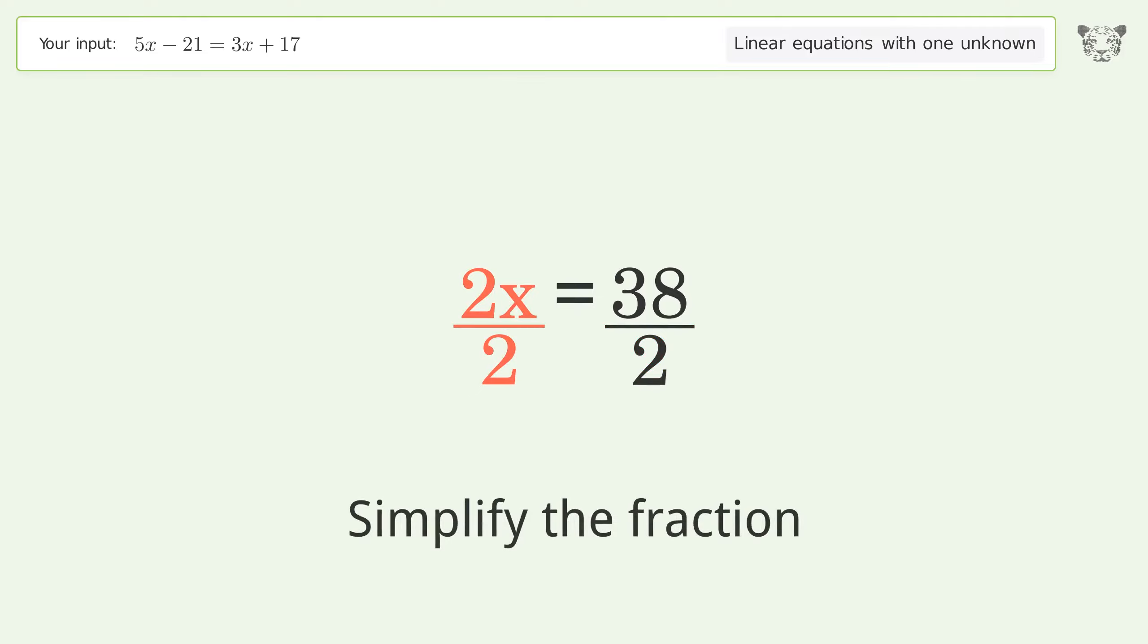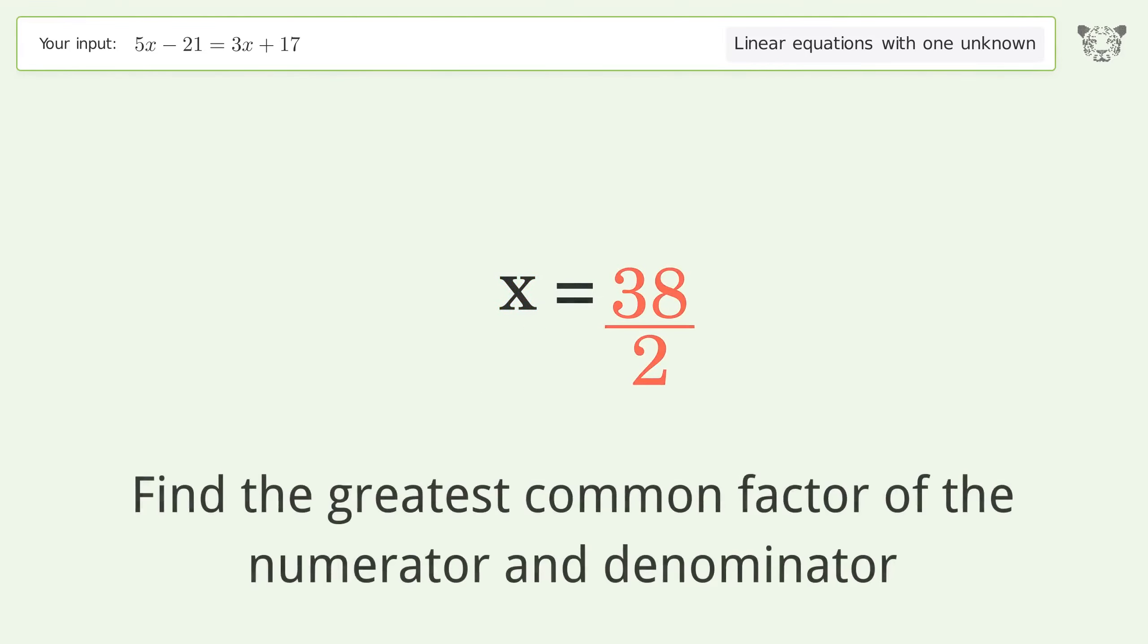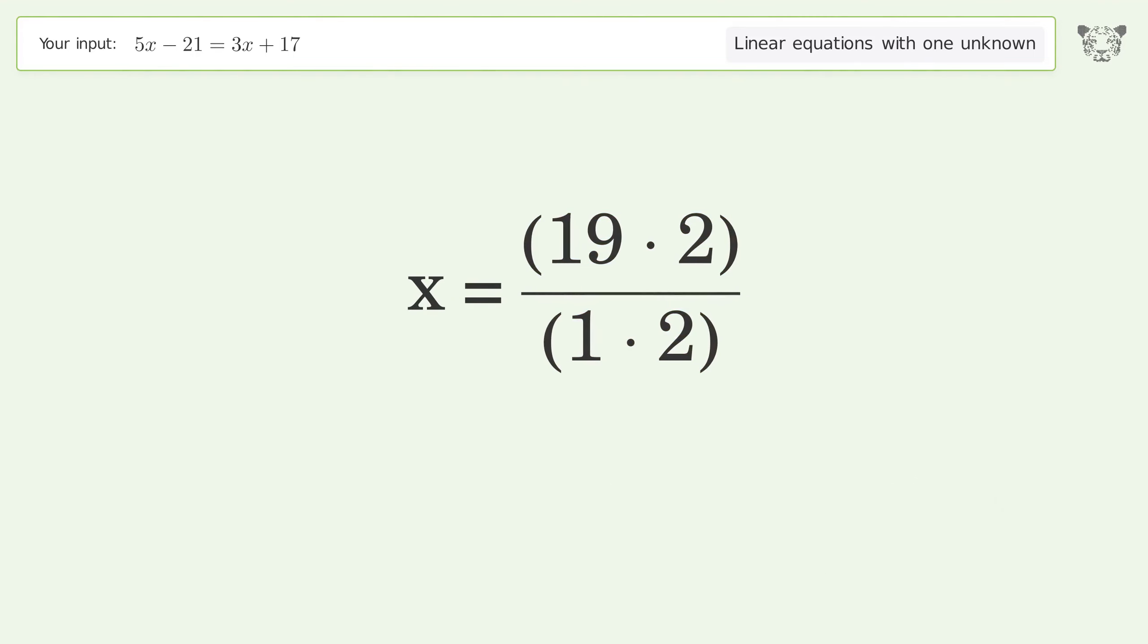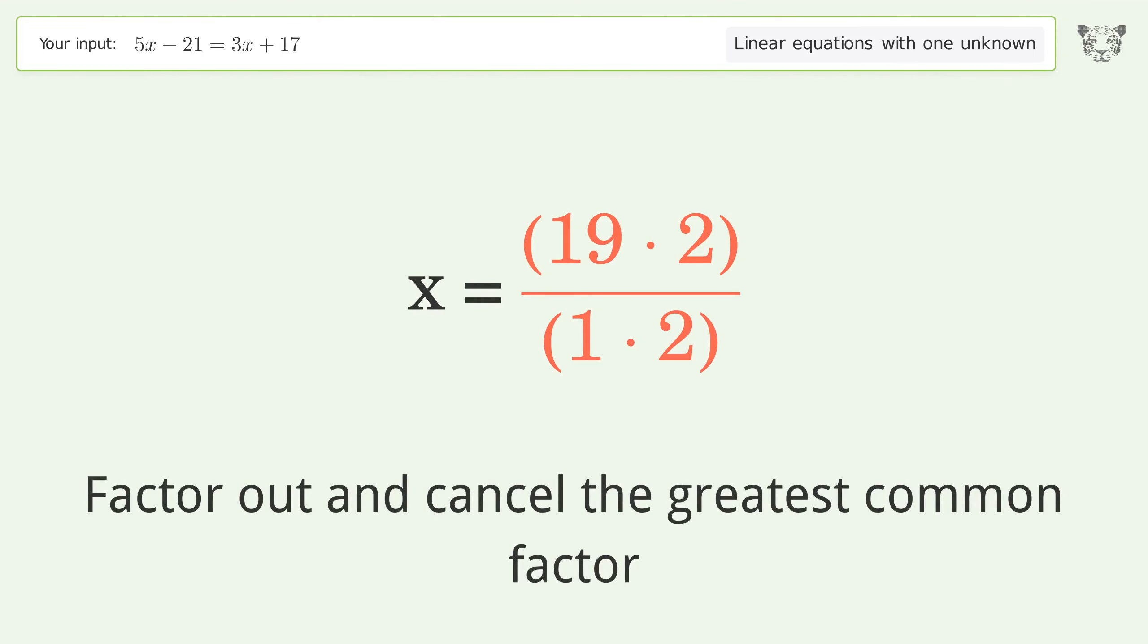Simplify the fraction. Find the greatest common factor of the numerator and denominator. Factor out and cancel the greatest common factor.